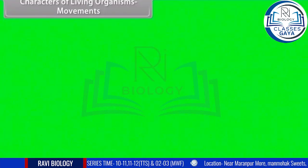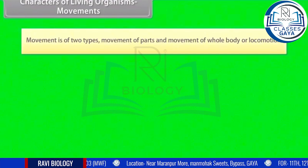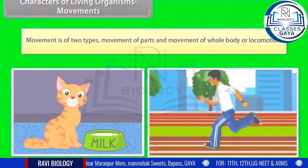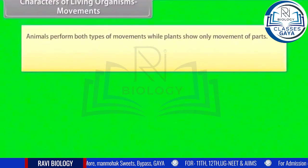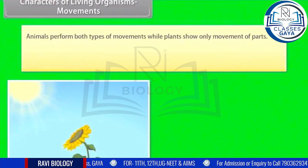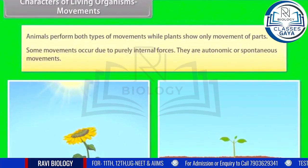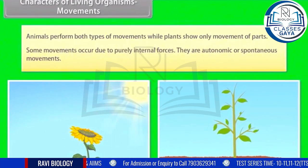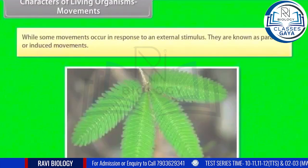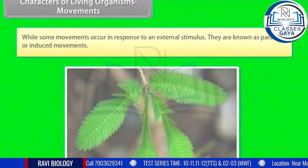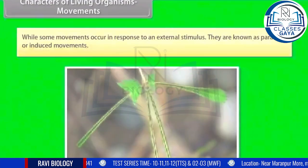Characters of living organisms — Movements: movement is of two types: movement of parts, and movement of the whole body, or locomotion. Animals perform both types of movements, while plants show only movement of parts. Some movements occur due to purely internal forces — these are autonomic or spontaneous movements. Other movements occur in response to an external stimulus and are known as paratonic or induced movements.